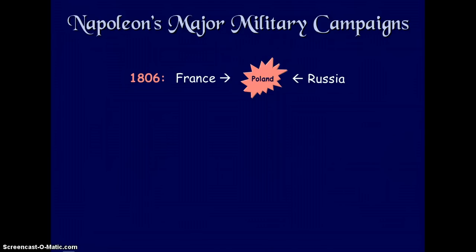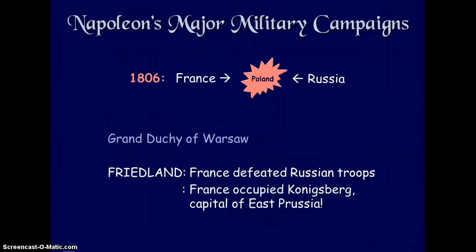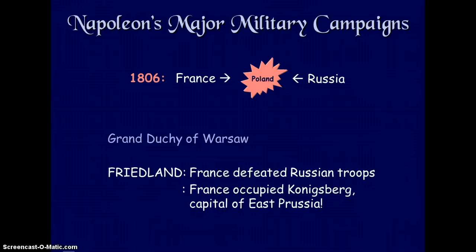In 1806, France attacked Poland, which was controlled by Russia. France defeated the Russian troops and occupied Königsberg, the capital of East Prussia.